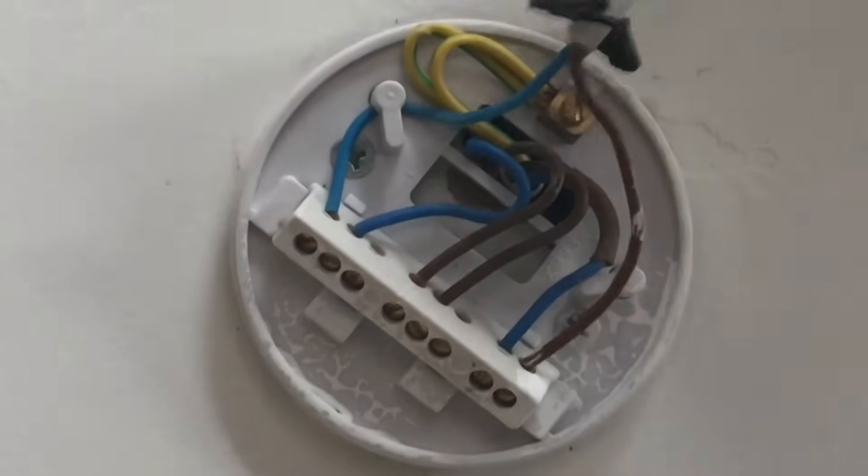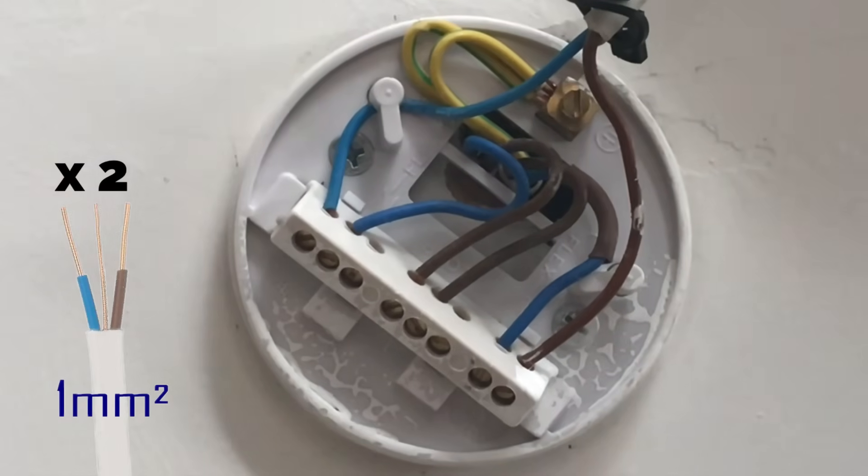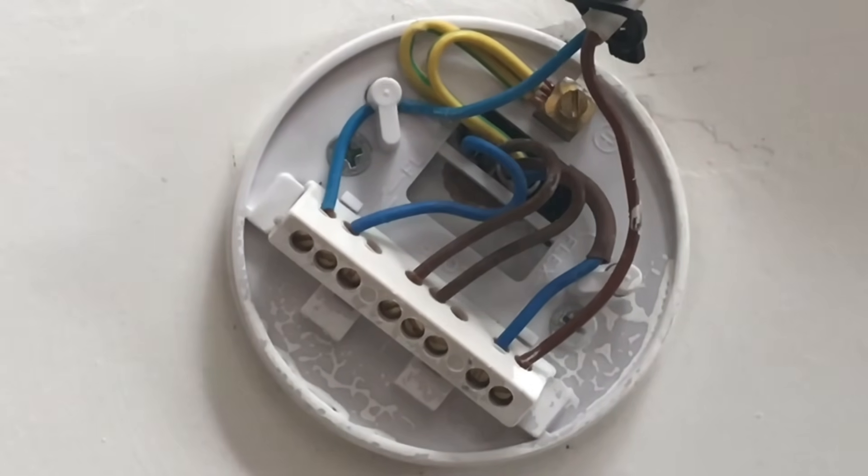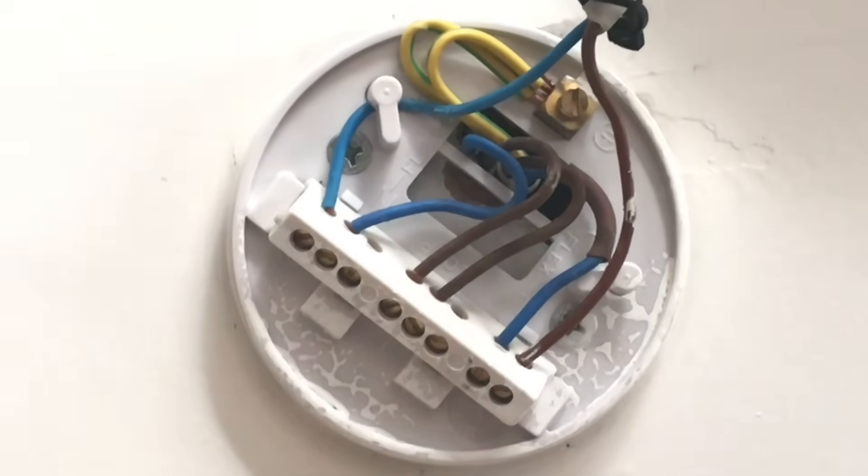So this time we only have two one millimetre squared twin and CPC cables coming into this fitting. The reason for that it is the final point on the radial lighting circuit and only has the supply coming in. It doesn't go off to another room.